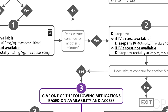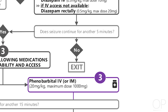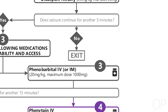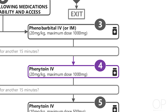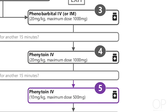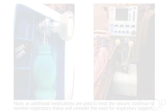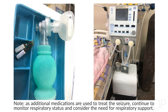We will now review what to do if you use phenobarbital after diazepam. Phenobarbital is given at the dose of 20 milligrams per kilogram with a maximum dose of 1,000 milligrams, administered intravenously, but can also be given intramuscularly if IV access is not available. If the seizure persists after 15 minutes, give a loading dose of phenytoin at 20 milligrams per kilogram IV with a maximum of 1 gram. Be careful — infusions can rarely cause bradycardia and hypotension, so heart rate and blood pressure should be monitored closely. A second dose of phenytoin at 10 milligrams per kilogram, maximum 500 milligrams, can be given after 15 more minutes of continuous seizure activity. As additional medications are used, continue to closely monitor the patient's respiratory status and consider the need for a ventilator if available.